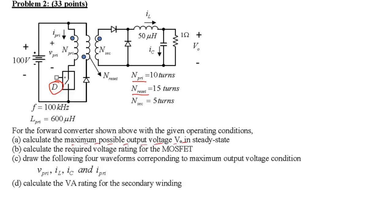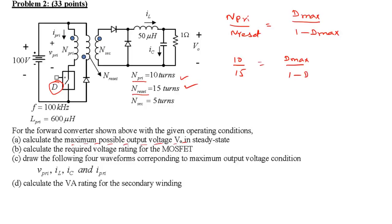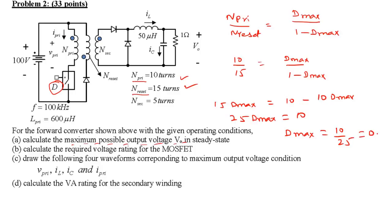The formula is: N_primary / N_reset = D_max / (1 − D_max). With N_primary / N_reset = 10/15, cross-multiplying gives 15·D_max = 10 − 10·D_max, so 25·D_max = 10, and D_max = 10/25 = 0.4. That is the maximum duty ratio we can operate this converter at for the given turns ratios.